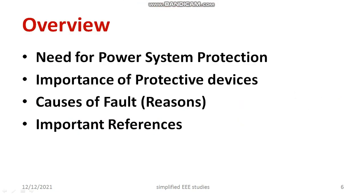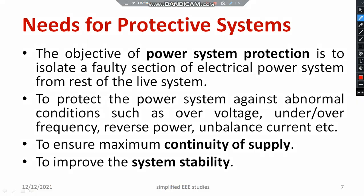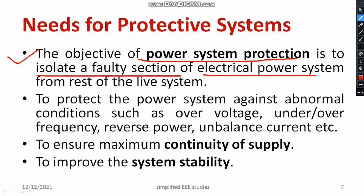First and foremost, I am going to discuss the need or the importance of power system protection. The ultimate goal or the main objective of power system protection is to isolate a faulty section of the electrical power system from the rest of the live system — to separate the faulty portion from the healthier portion. That is the ultimate goal of power system protection.